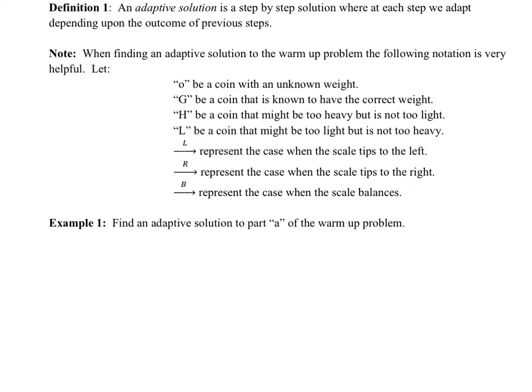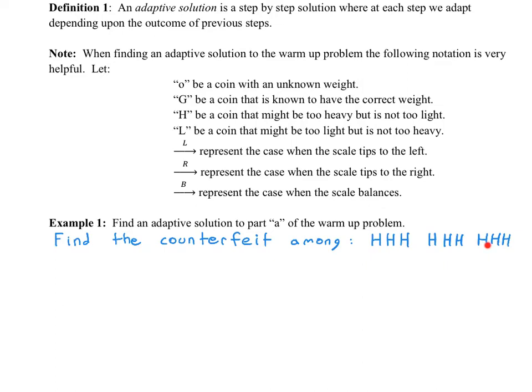We'll start discussing part A of the warm-up problem, where we had nine coins and one could be too heavy. In our notation, we write nine H's — all nine coins possibly too heavy. Eight of them are good, but we don't know which eight, so one of them we know for sure is the heavy counterfeit.